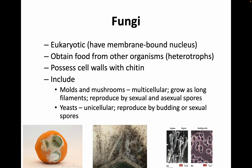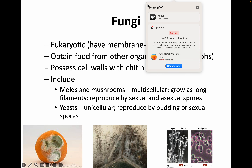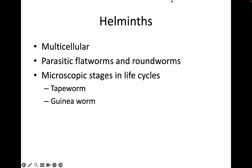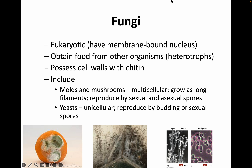Fungi are another group of eukaryotic microbes. They obtain food from other organisms, so they're heterotrophs — they don't do photosynthesis. They possess cell walls with chitin, a special type of carbohydrate. They include molds and mushrooms, which are multicellular, can grow as long filaments, and are reproduced by sexual and asexual spores. Yeasts, however, are unicellular and reproduce by budding or sexual spores.